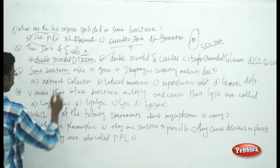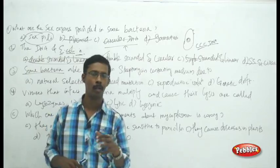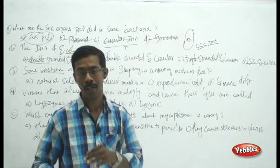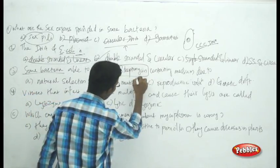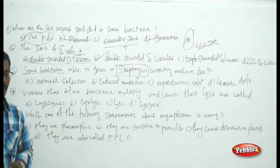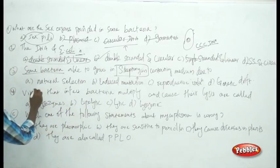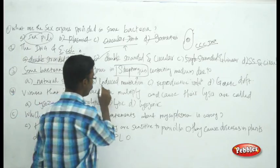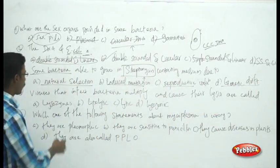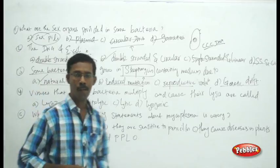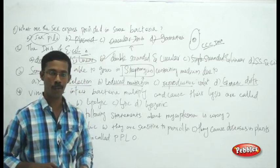The next question: some bacteria are able to grow in streptomycin-containing medium due to — natural selection, induced mutation, reproductive isolation, or genetic drift? Normally antibiotics inhibit bacteria, but some bacteria adapt and survive. The answer is natural selection — by means of antibiotic selection pressure, some bacteria adapt to grow in that particular environment.